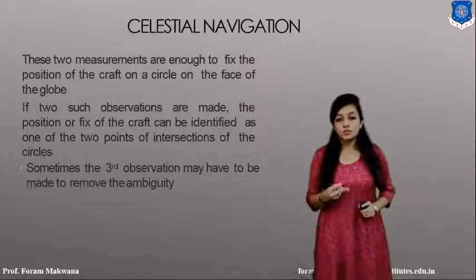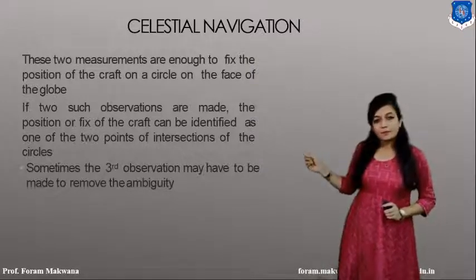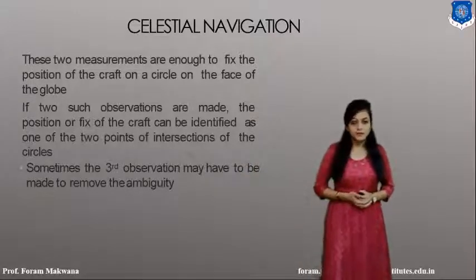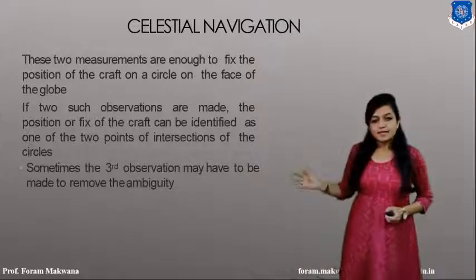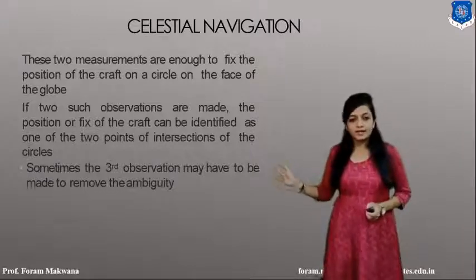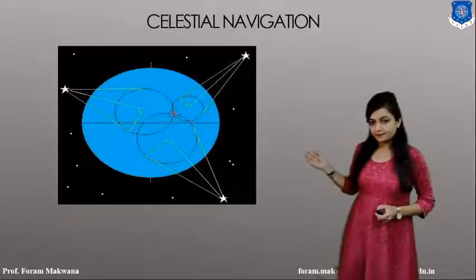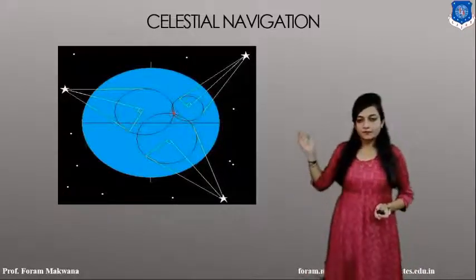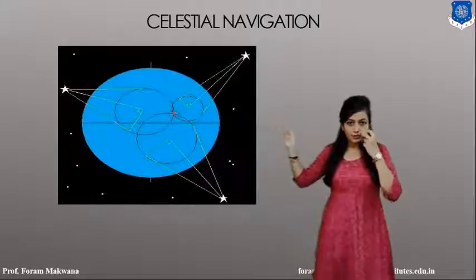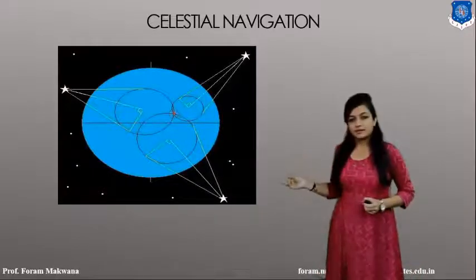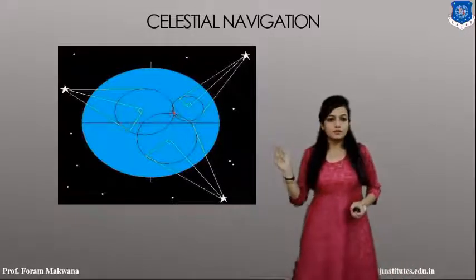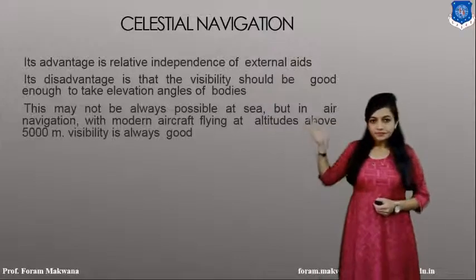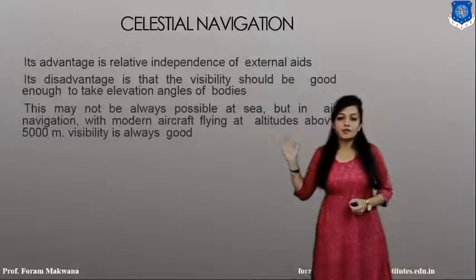If we are able to take two such observations, the position of the aircraft becomes fixed as one of two points on the intersection of circles. Sometimes, to find the precise position and fix the position of the aircraft, we can take a third observation. Three observations need to be taken for accurately finding the position of the aircraft globally. In celestial navigation, the advantage is that it is relatively independent of external aids.